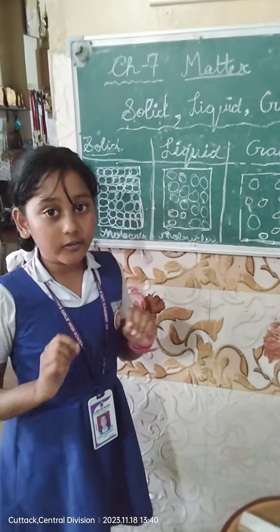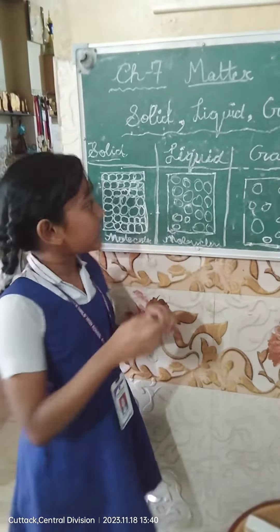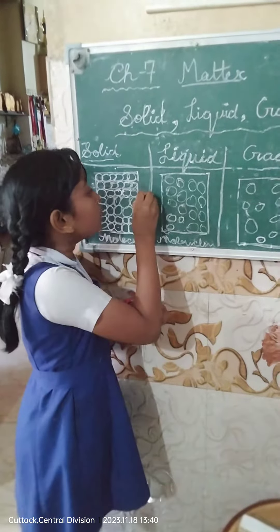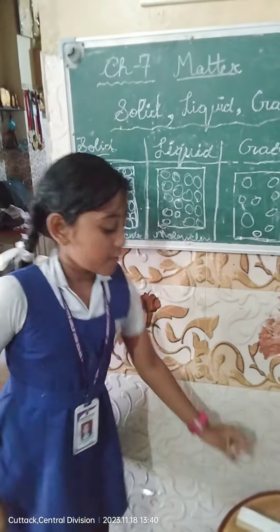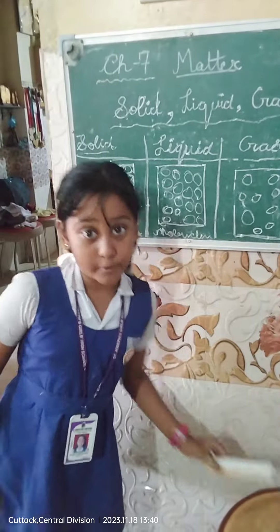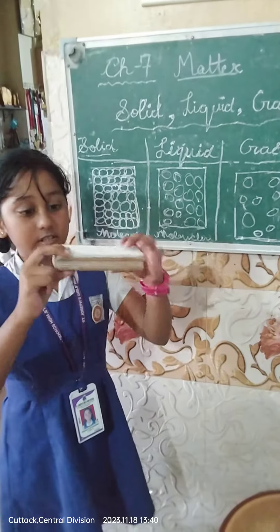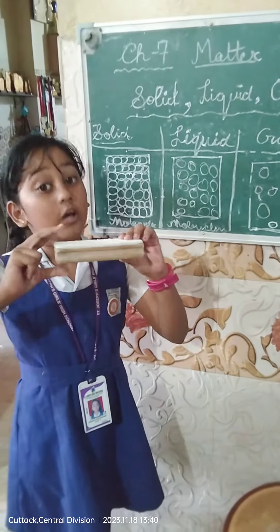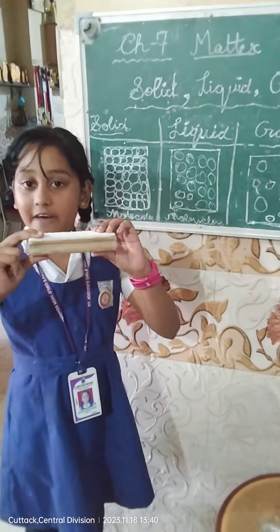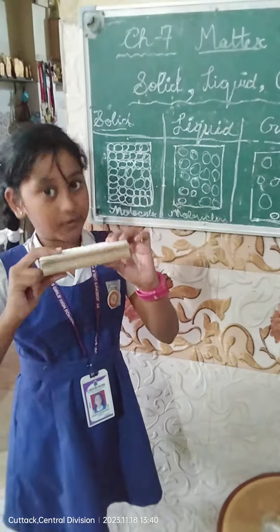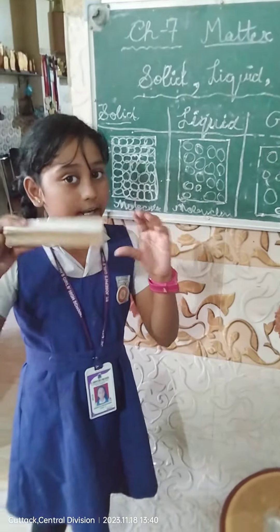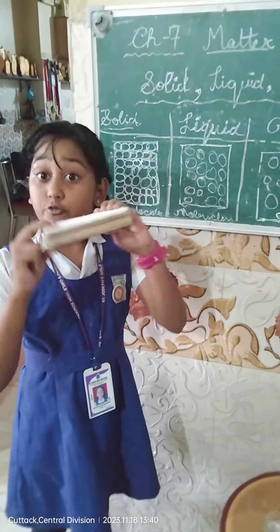Solid. Molecules in solid are closely packed. For example, this is a duster. They have a definite shape and volume. It cannot flow.